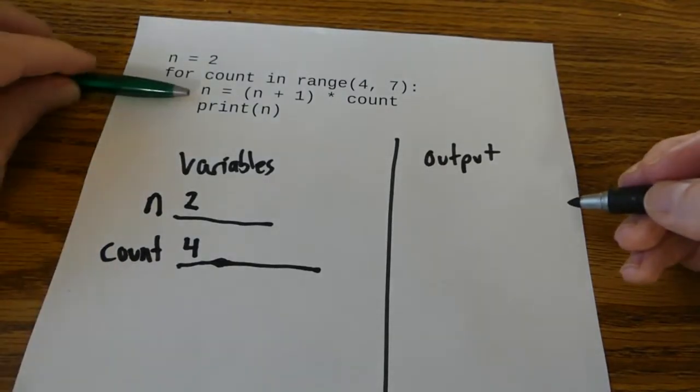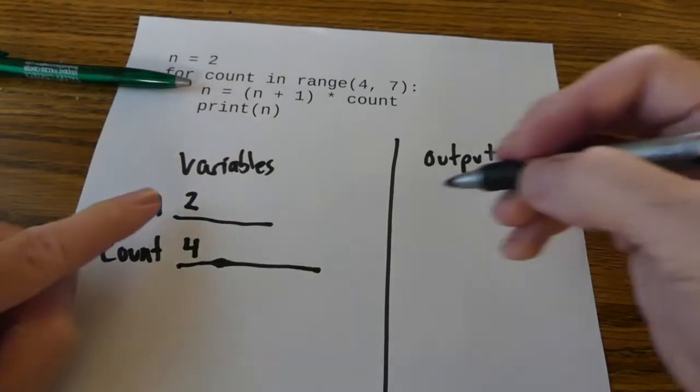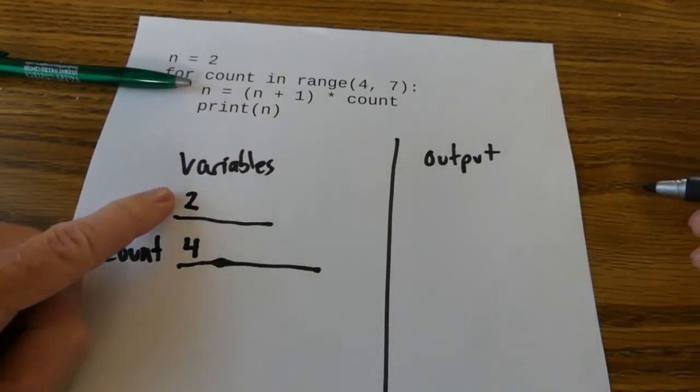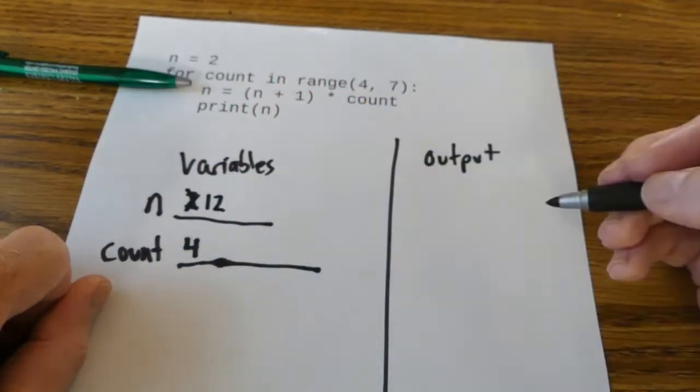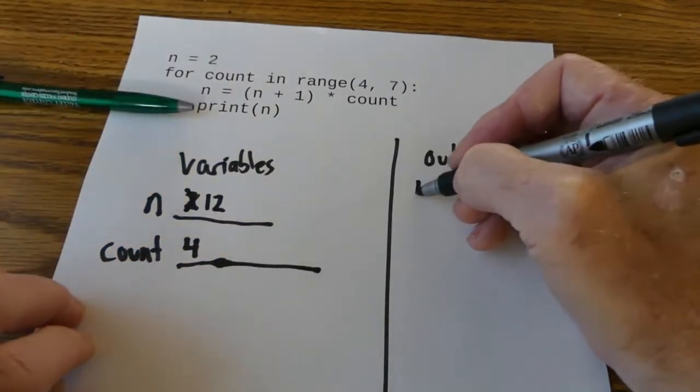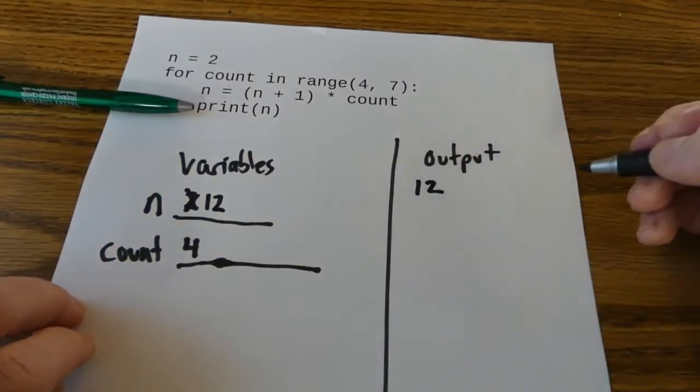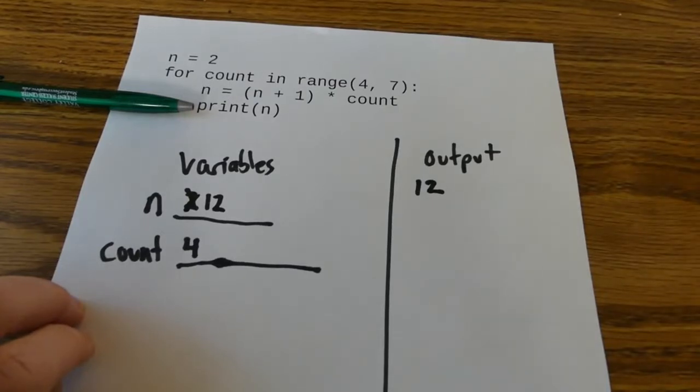Now I move on to the next statement. I take the right-hand side. So n right now is 2. 2 plus 1 is 3 times 4 is 12 and that goes back into n. So n now is 12. Now I say print n. So I'm just going to get the number 12. I'm not going to get the words n is 12. I want to see exactly what will be on the screen and it'll be just the number 12.